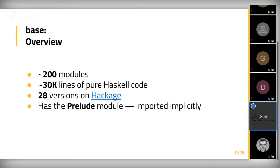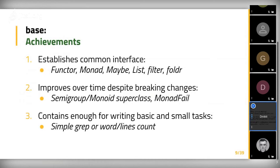Base actually has a lot of good things. For example, it establishes a common interface — type classes like Functor or Monad, data types like Maybe or List, and functions like filter and foldl. It's important to establish a common interface because the standard library is the language we use. If you see a function called filter or foldl, you most likely know what it does. If somebody talks about functors, you know what functor means. Everyone can understand everyone. It's important to have a common interface.